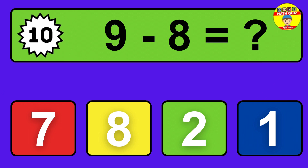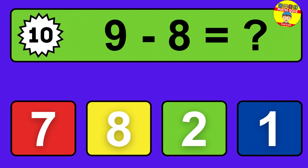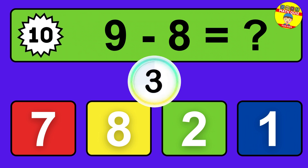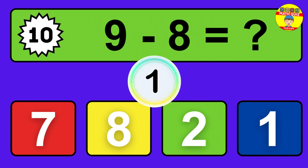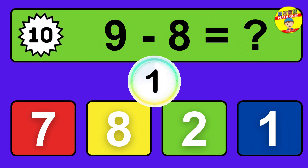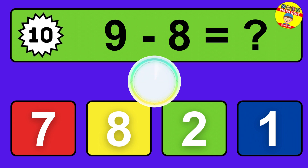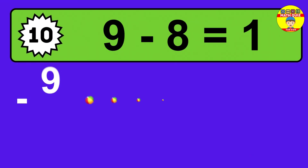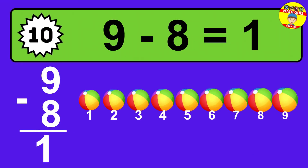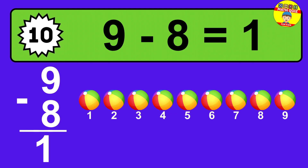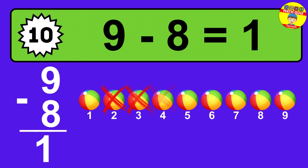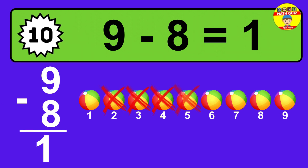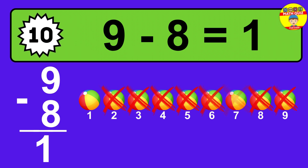Question ten: nine minus eight equals what? The answer is nine minus eight is one. Let's count it. One.